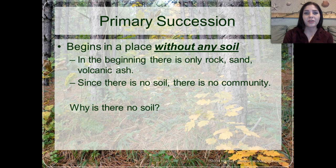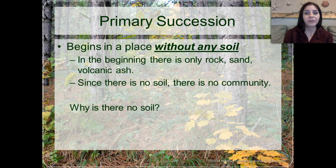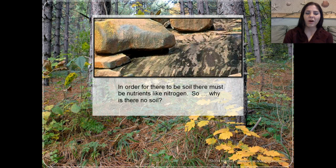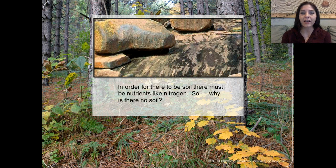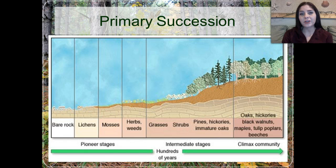Primary succession begins in a place without any soil — only rock, sand, or volcanic ash. Since there is no soil, there is no community. In order for there to be soil, there must be nutrients like nitrogen. We can't have nitrogen or nutrients unless we have some type of organic matter that has died, decayed, and been decomposed by some type of decomposer.